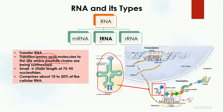Here you can see that transfer RNA has a specific shape with an anticodon region that binds with messenger RNA, and it carries an amino acid to the site of protein synthesis. The tRNA binds to mRNA through its anticodon, facilitating protein synthesis. Transfer RNA molecules are small in size, with a length of 75 to 90 nucleotides only, and comprise 10 to 20 percent of the cellular RNA.